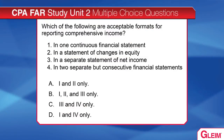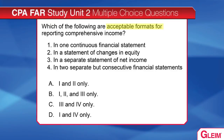Now let's look at another multiple choice question. Be careful with this one — you have items one, two, three, and four, and you have to decide which combination is correct. The question asks: which of the following are acceptable formats for reporting comprehensive income? Item one says in one continuous financial statement — that's correct.